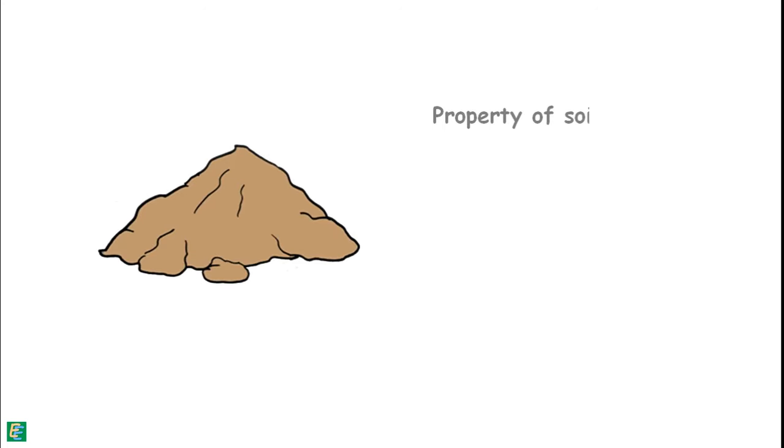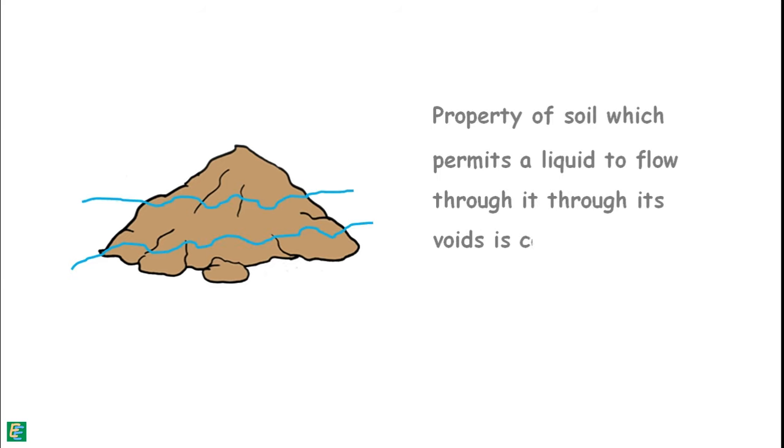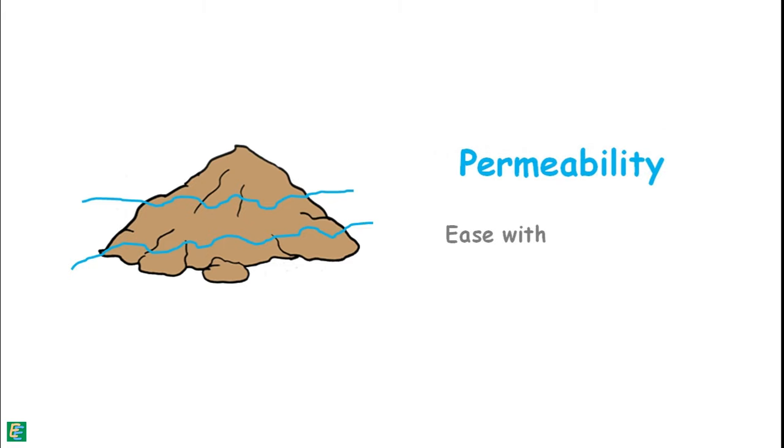This property of the soil which permits water or any liquid to flow through it through its voids is called permeability. It is the ease with which water can flow through the soil.